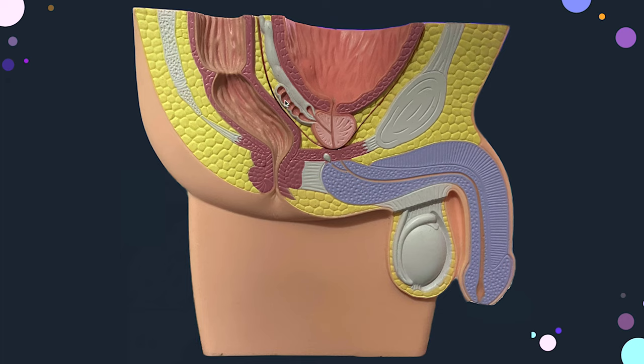Around 30 percent of seminal fluid is contributed from the seminal vesicles. In females there is no prostate, so the female homologue is a small group of para-urethral glands known as Skene's glands.